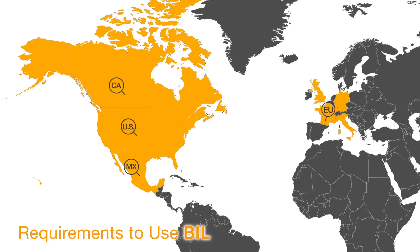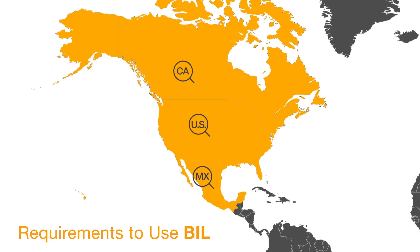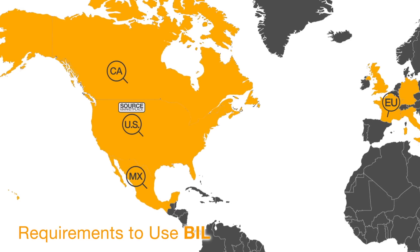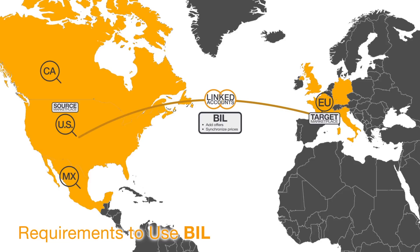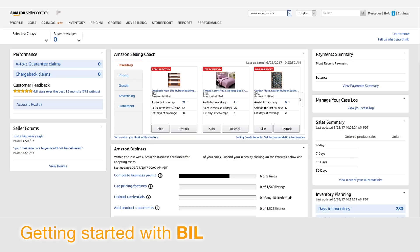For example, if you are currently selling in the US marketplace and want to make your products available for sale in Mexico, with a unified account you can use BIL to select the US as your source marketplace and add offers to your target marketplace, Mexico. With linked accounts, you can select the US as your source marketplace and add your offers to any of the five European target marketplaces using BIL.